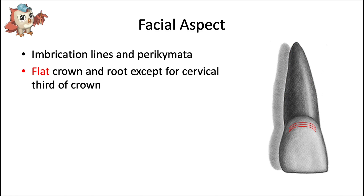A correction from the last video: the perikymata are the cervical ridges, and the imbrication lines are the grooves between those ridges. They're probably most noticeable on the maxillary central incisors and are visible on the cervical third of the tooth near the gum line. That cervical third area is the most convex part of the entire tooth; everything else from the facial perspective is pretty flat, both the crown and the root.